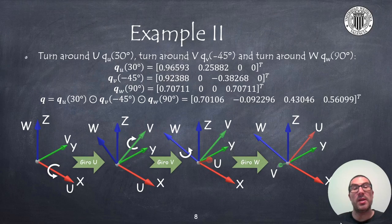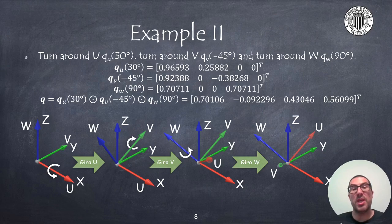Similarly, we can perform rotation operations with quaternions, but this time with rotations with respect to the mobile reference frame. In this case, the operation we must perform is a post-multiplication of quaternions, obtaining different results compared to the previous example, because the axes of the mobile reference frame change their direction as we apply the rotations.